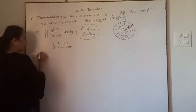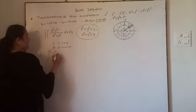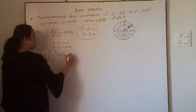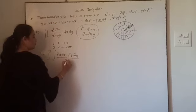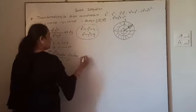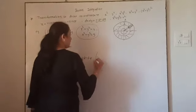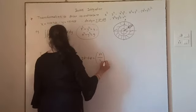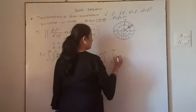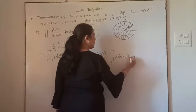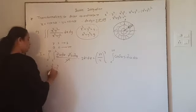Substituting, we get I = ∫₀²π ∫₂³ [r² cos²θ · r² sin²θ / r²] · r dr dθ. The r² in the denominator cancels with r² in the numerator, leaving r² · r = r³. Integrating r³ gives r⁴/4. Applying limits from 2 to 3 gives 3⁴ − 2⁴, divided by 4, multiplied by ∫₀²π sin²θ cos²θ dθ.